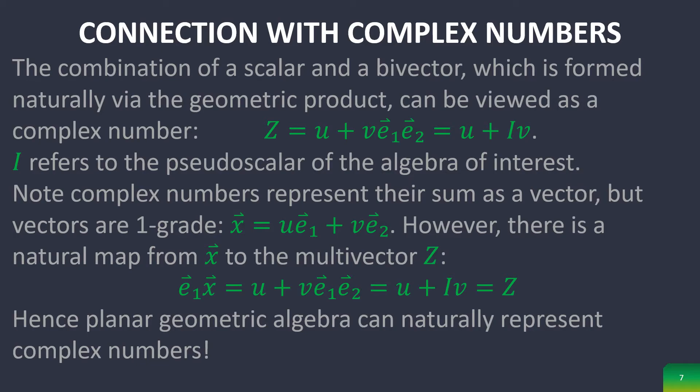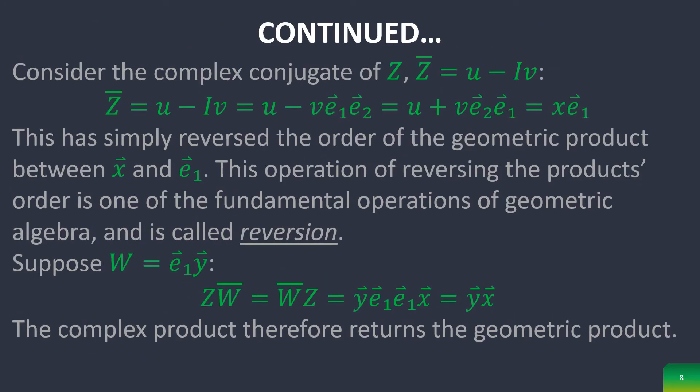Therefore, planar geometric algebra can naturally represent complex numbers. And if you consider the conjugate of them, you can prove that this is equal to, or logically equivalent to, the operation from geometric algebra called reversion.